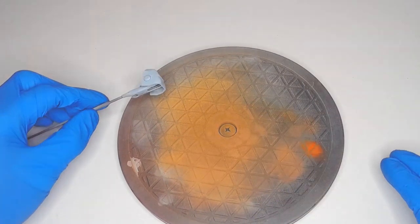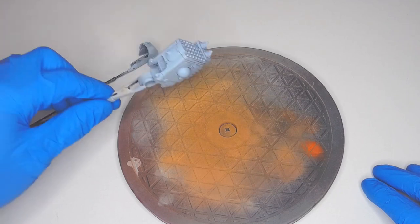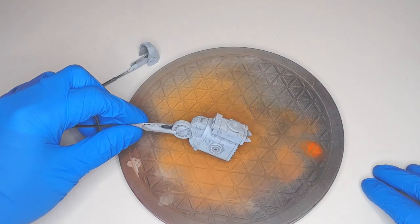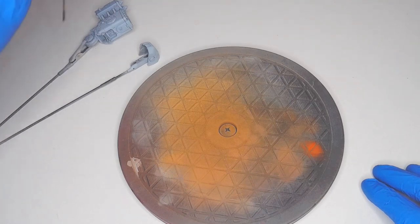The dark machine portions of the model were done with black primer with a zenithal highlight of Vallejo Model Air Base Grey and dry brushed with Citadel Administratum Grey layer paint.